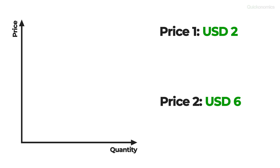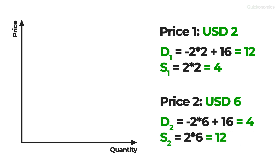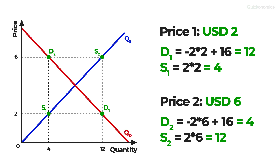If we plug those numbers into the supply and demand functions, we find that at a price of $2, the quantity demanded equals 12 candy bars and the quantity supplied is 4 bars. Meanwhile, at a price of $6, the quantity demanded is 4 candy bars and the quantity supplied adds up to 12 bars. Now we can plot these four combinations in our graph and draw one line through the two ordered pairs of the supply function and another through the demand function to get the supply and demand curves.